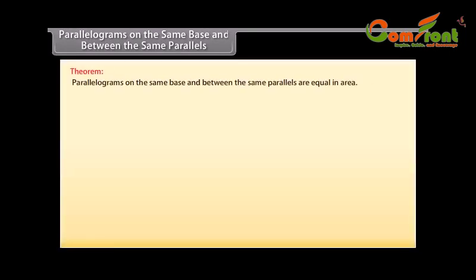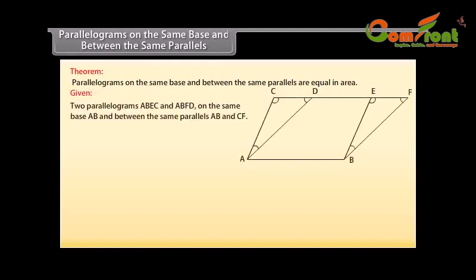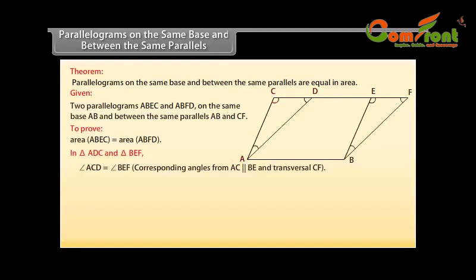Theorem: Parallelograms on the same base and between the same parallels are equal in area. Let us prove this theorem. Two parallelograms ABEC and ABFD on the same base AB and between the same parallels AB and CF are given. We need to prove that area of ABEC is equal to area of ABFD. In triangle ADC and triangle BEF, angle ACD is equal to angle BEF because these are corresponding angles from AC parallel to BE and transversal CF. Mark it as one.